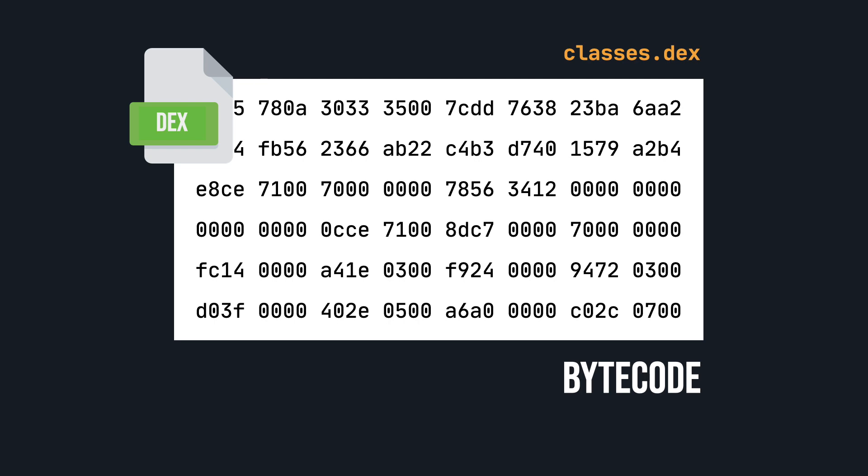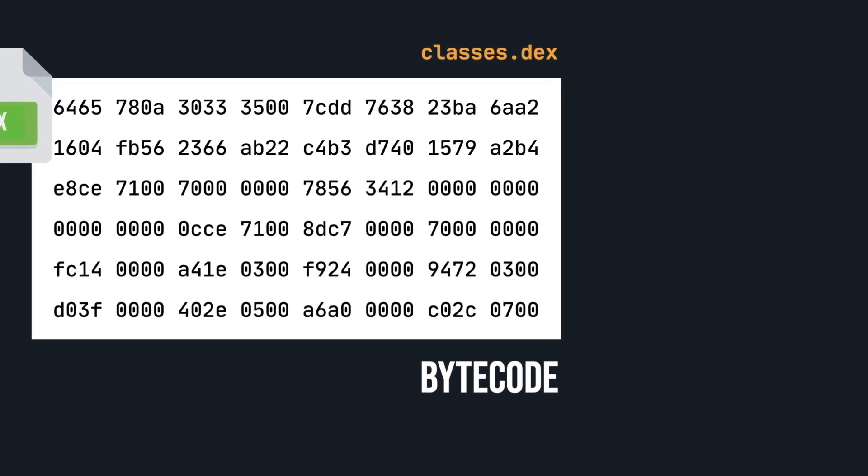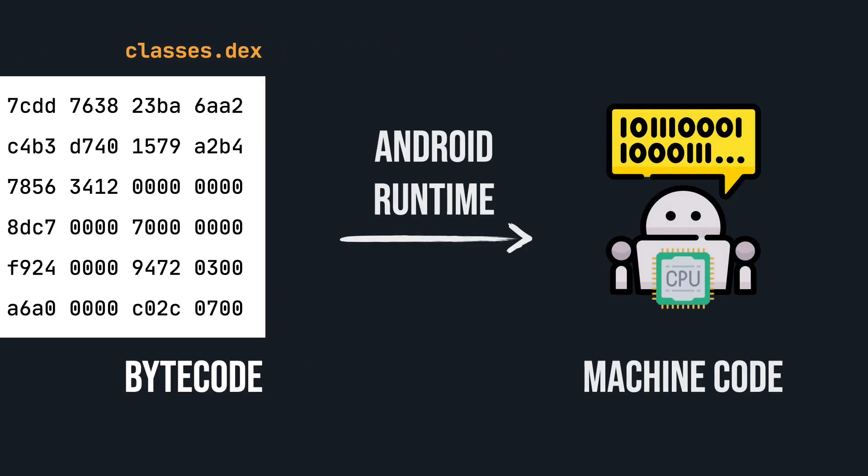Those files are written using low-level code designed for our software interpreter — the bytecode. When a user runs our app, the bytecode written in DEX files is translated by Android Runtime into machine code, a set of instructions that can be directly understood by the machine and is processed by the CPU. Android Runtime also manages memory and garbage collection, but I will focus only on the compilation part.